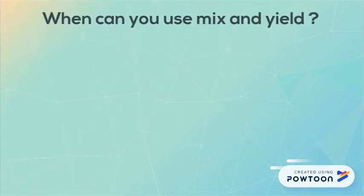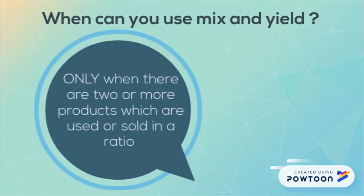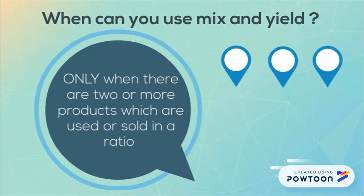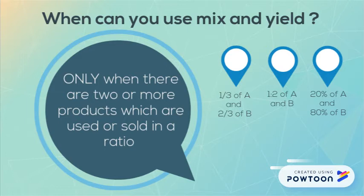You can only use a mix and yield variance when there are two or more products which are sold or used in a ratio, such as a third and two thirds of A and B, one to two of A and B, or 20% to 80% of A and B.